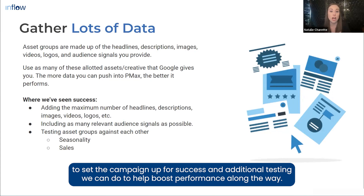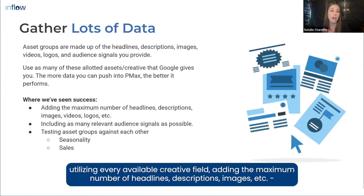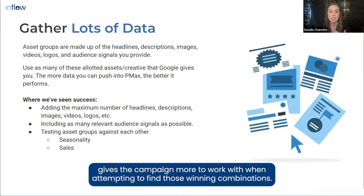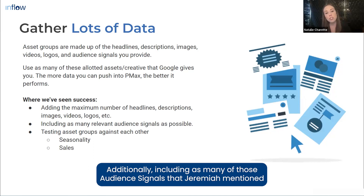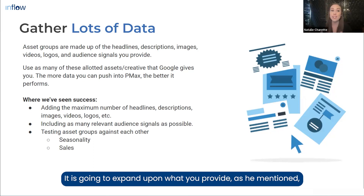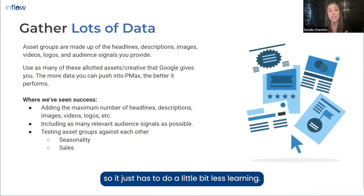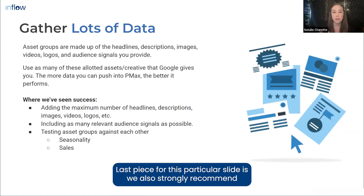A few things we have found to make for a more successful Performance Max strategy: start by utilizing every available creative field. Adding the maximum number of headlines, descriptions, images, etc., gives the campaign more to work with when finding winning combinations. Additionally, including as many audience signals as possible helps guide the campaign toward your ideal customer — it will expand beyond what you provide, but it starts with less learning needed from the beginning.